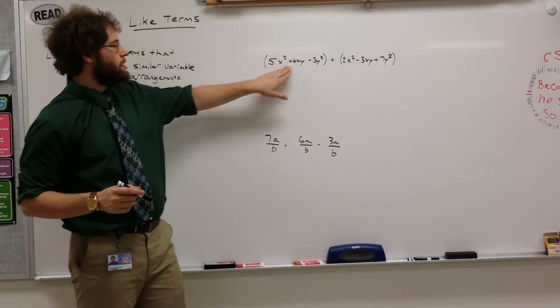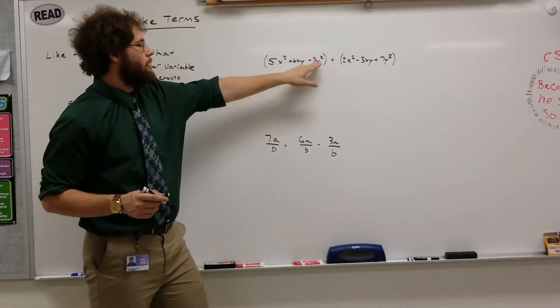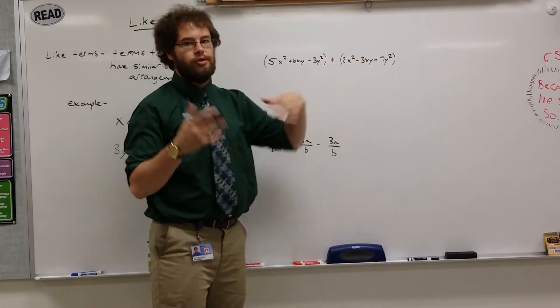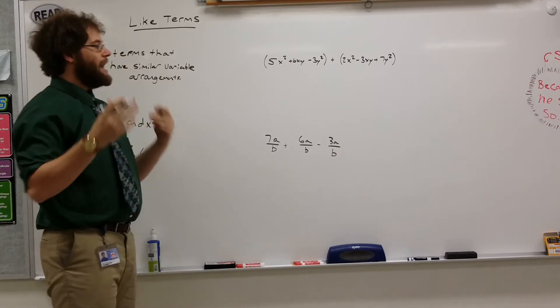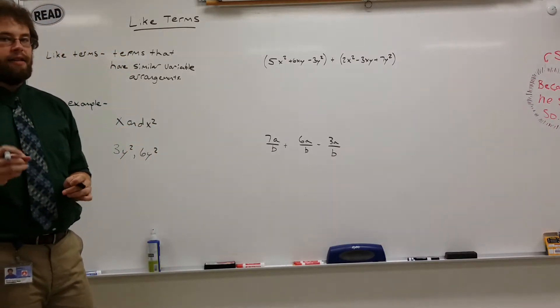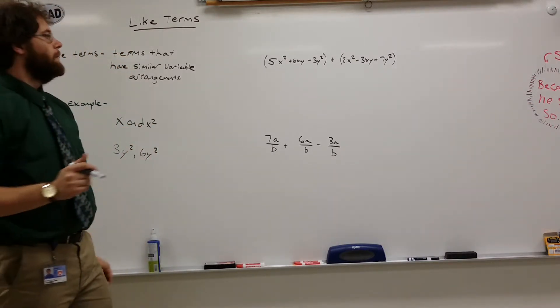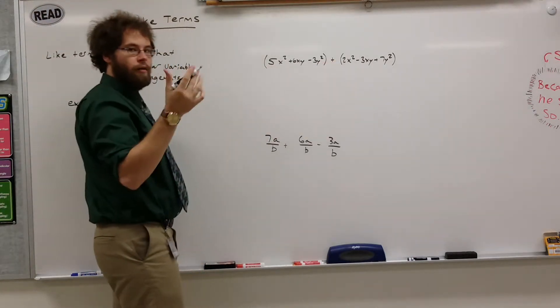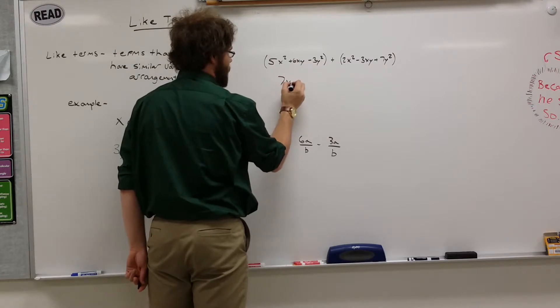Over here we have 5x squared plus 6xy minus 3y squared plus 2x squared minus 3xy plus 7y squared. Two trinomials. If you're going to add those things, you can only add the things with the similar terms. So 5x squared and 2x squared are like terms. I can add those things. So I get 7x squared.